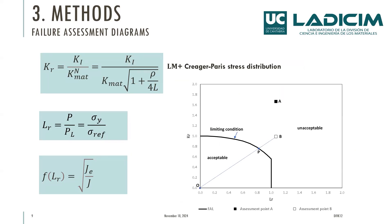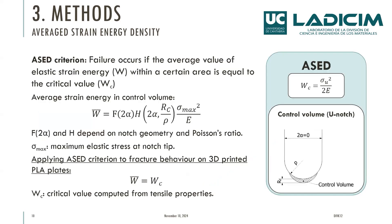On the other hand, we have this engineering tool that addresses both fracture and plastic collapse mechanisms. We can locate coordinates in a safe area above the value of the fracture line and in a safe area under the plastic collapse line. The other criterion is the average strain energy density, where the failure criterion states that the average value of strain energy within a control volume equals a critical value, which we calculate to find the answer.